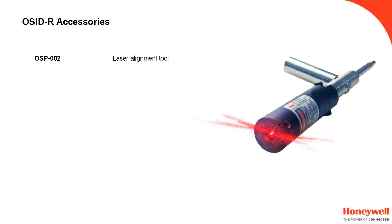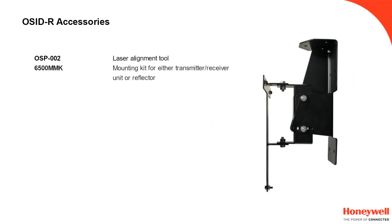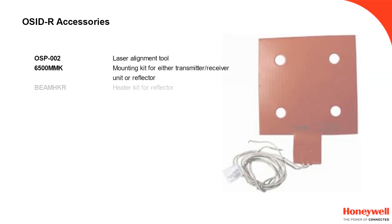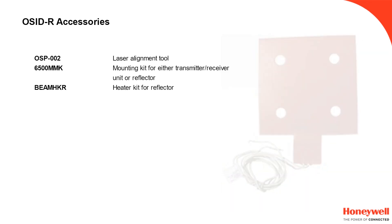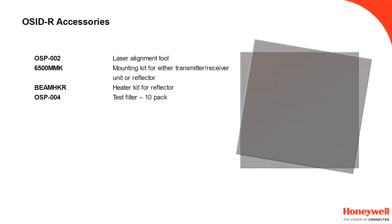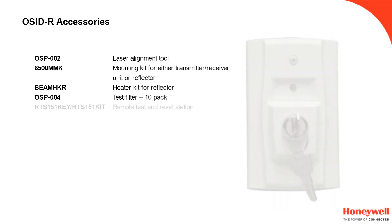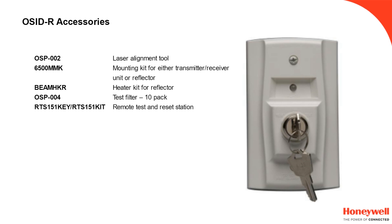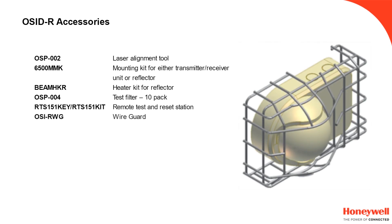There are a range of accessories available for the OSID R and the rest of the OSID family. The laser alignment tool is available to help with the initial aiming of the device. There is a mounting kit which provides additional directional adjustability. A heater is available for the reflector. Test filters are available, sold in packs of 10. The remote station provides an electronic device for resetting the detector from ground level. For devices used in sports halls or otherwise liable to mechanical damage, a wire guard is available.